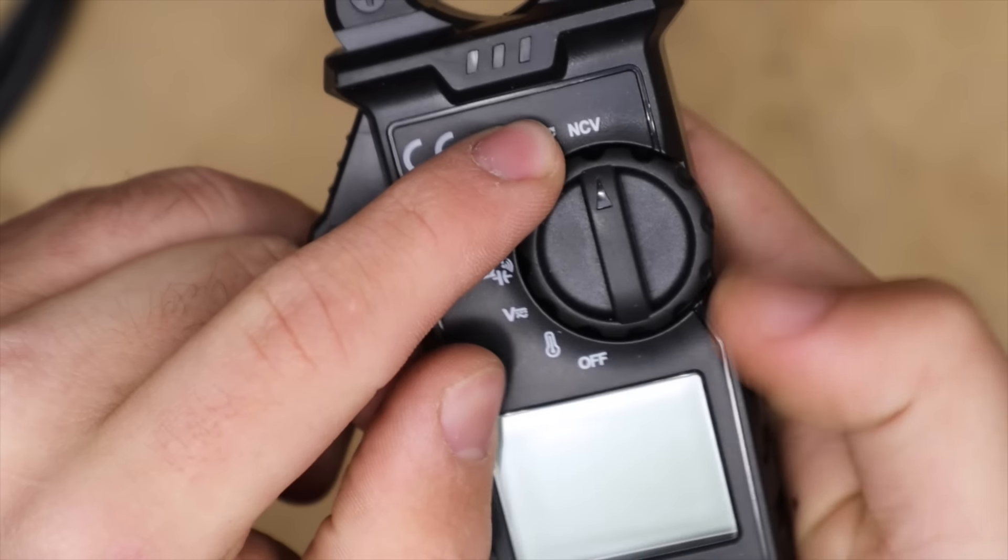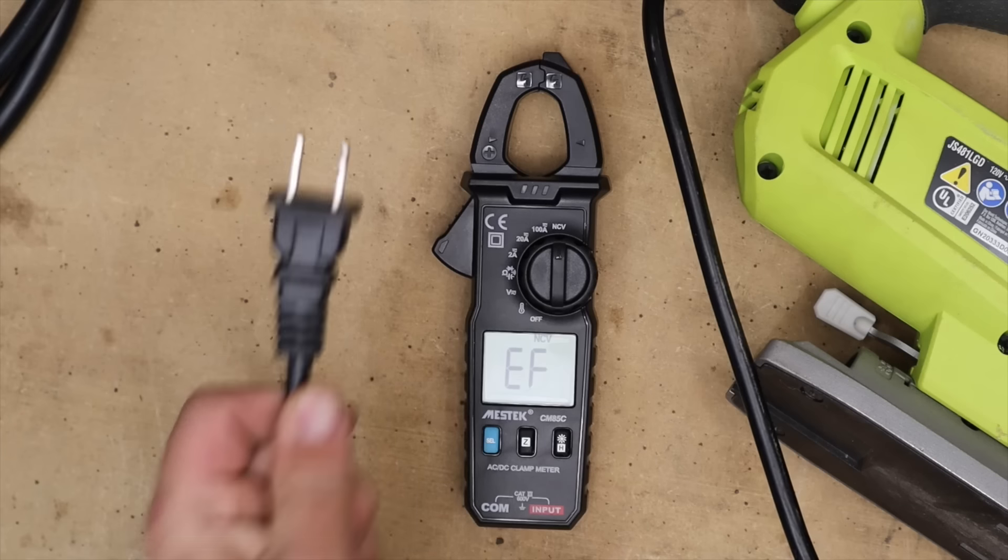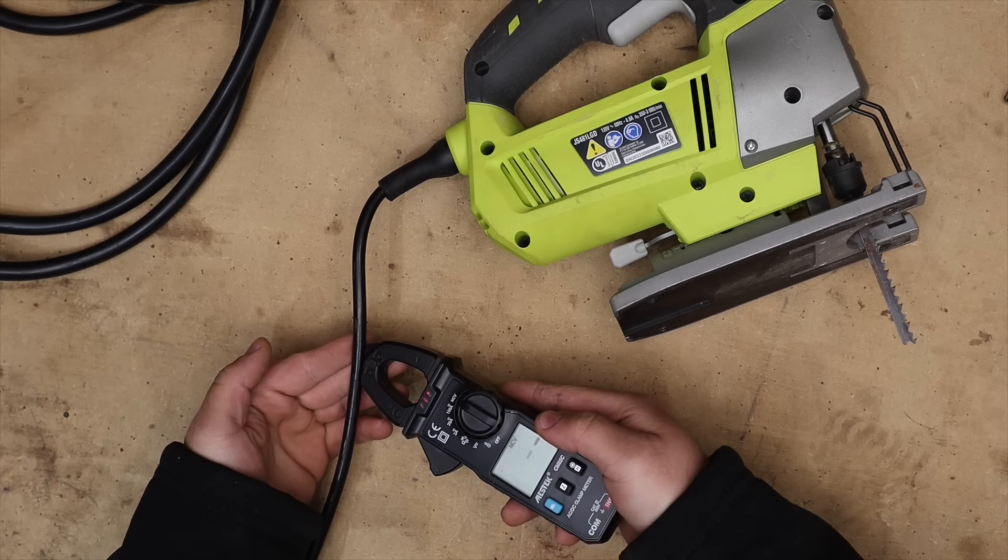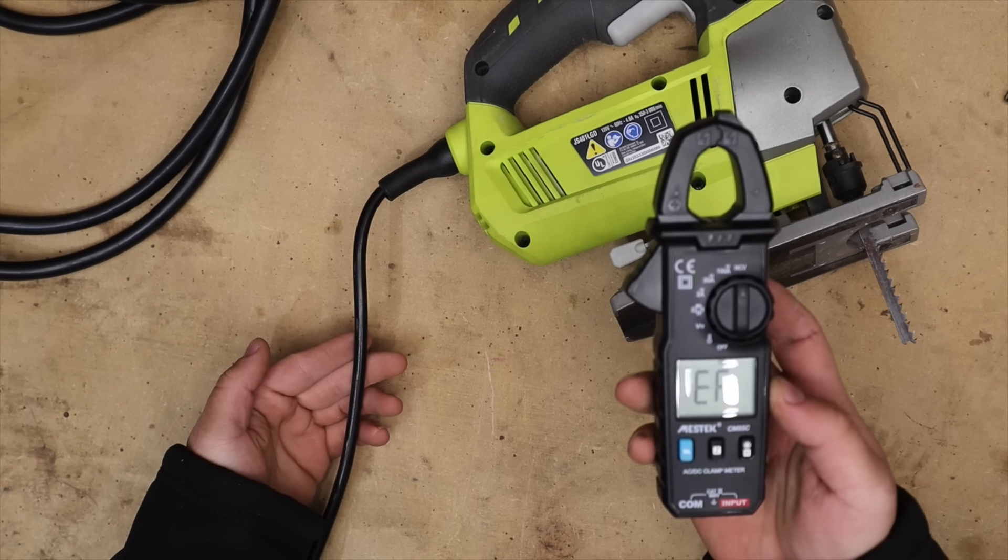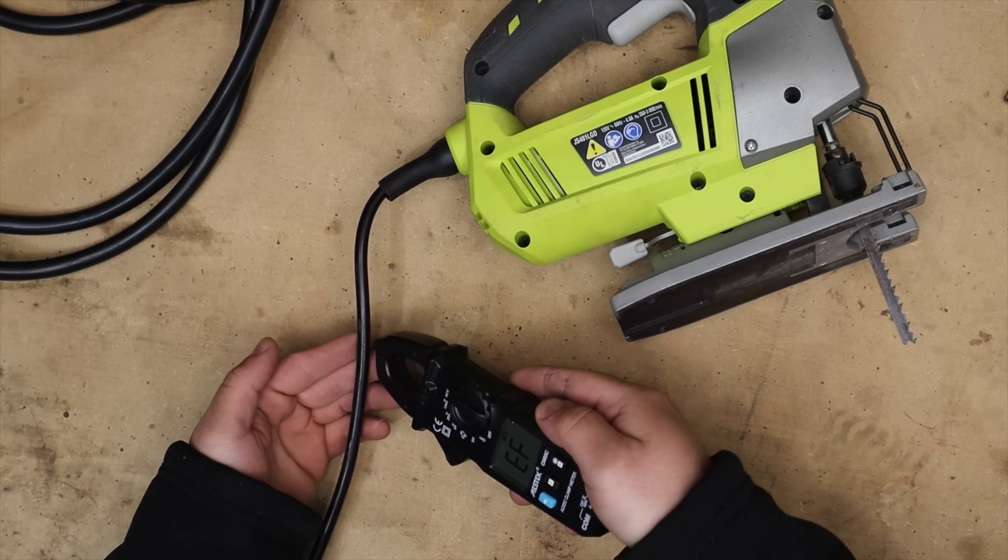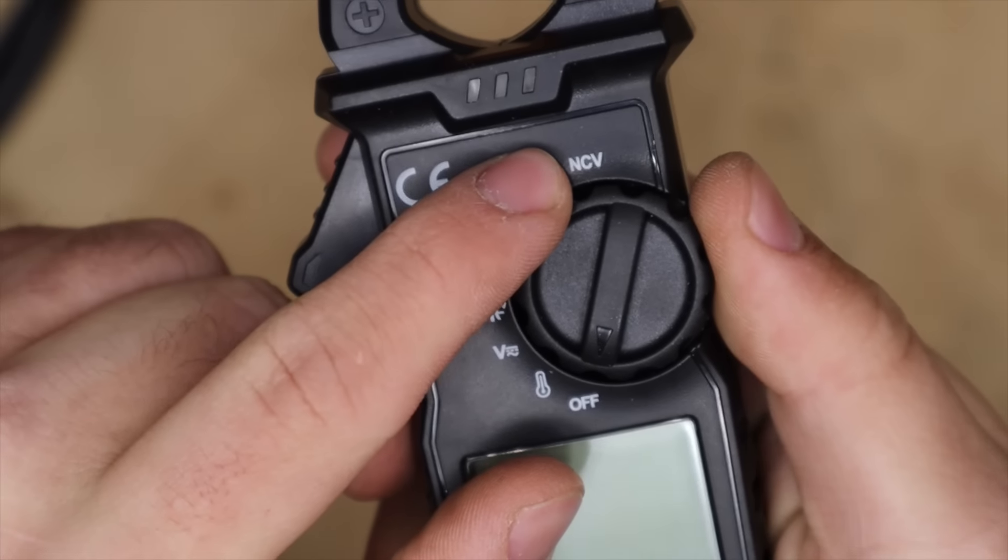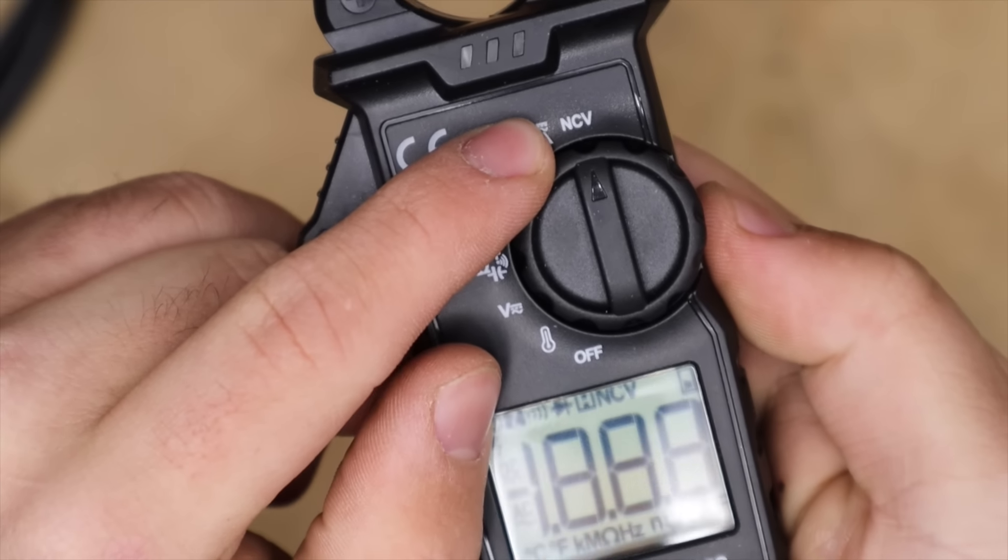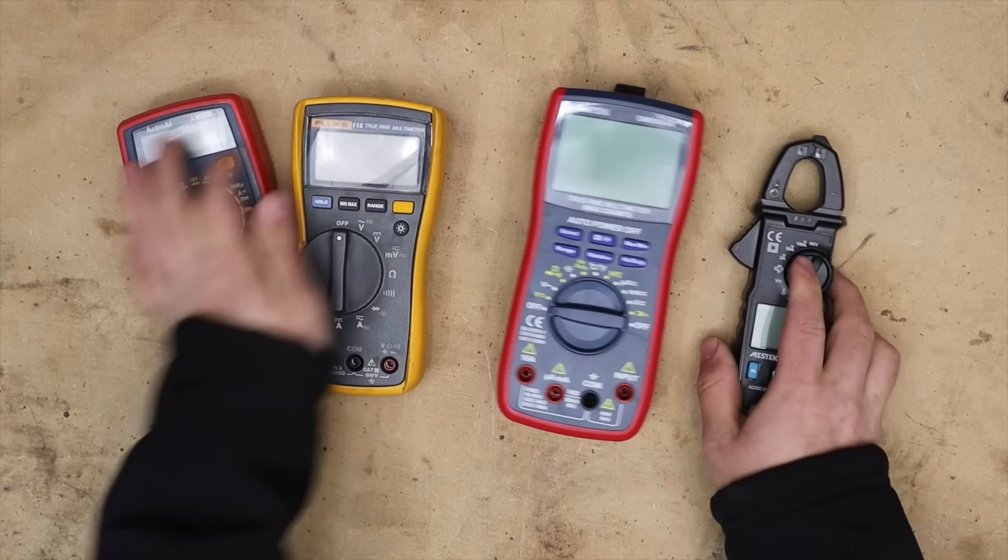Another feature common on these clamp devices is NCV which is no contact voltage. This is a setting that the device will alert you when you approach voltage with the tip of the device. This is just an extra safety feature for finding live wires. I wouldn't usually rely on this feature and those are the most common features on a multimeter.